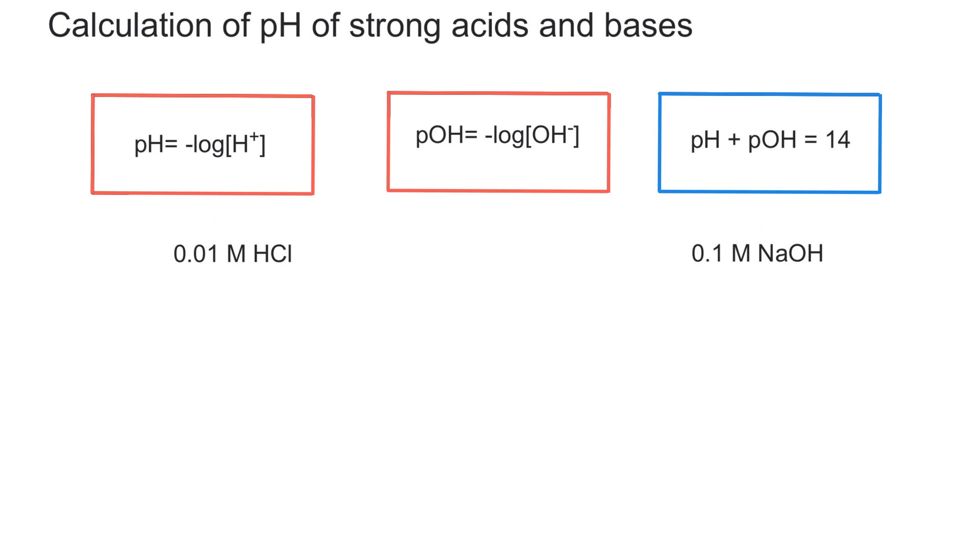An easy way to remember that is to associate the p with the negative log base 10 of x or whatever you have. So for pH, x is the hydrogen ions, so then you have the concentration as x. But I talked more about this on the previous video, which is the overview of pH and pOH. I'll also link that to this video if you want to know more about that.